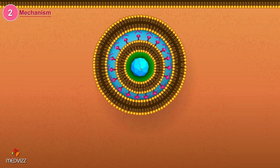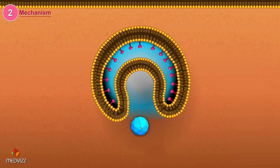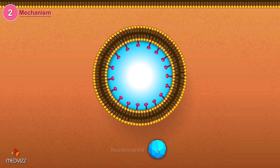The envelope of the virion then fuses with the plasma membrane of the vesicle and the nucleocapsid is released into the host's cytoplasm. The capsid protein is then removed, releasing the nucleic acid of the virus.